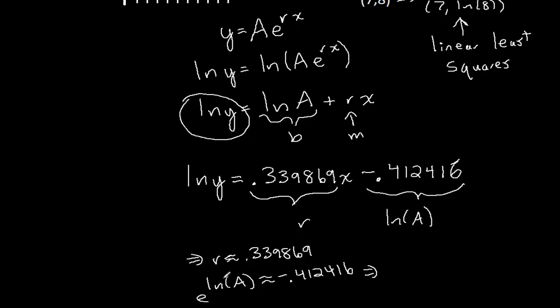So, if I want to get A, I raise e to the power of each side, and I get the A is about e to the negative 0.412416. Actually, I need to use my desktop calculator here. It turns out that the computer calculator doesn't have an e to the power of button. e to the power of negative 0.412416. That gives me about 0.662049.